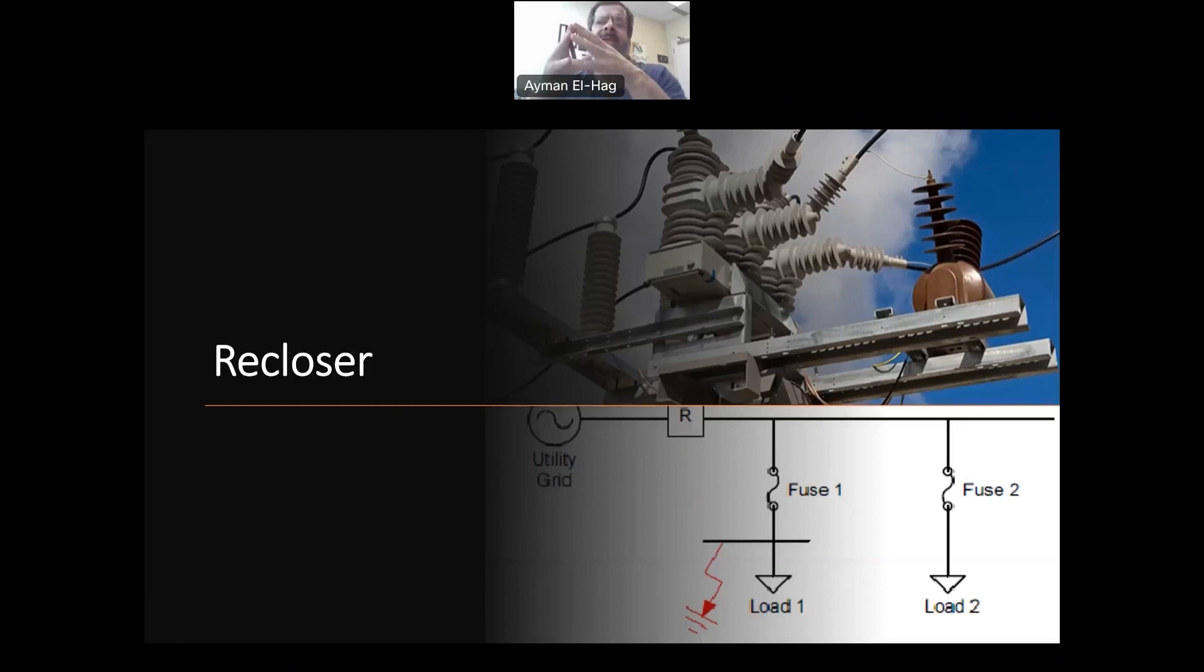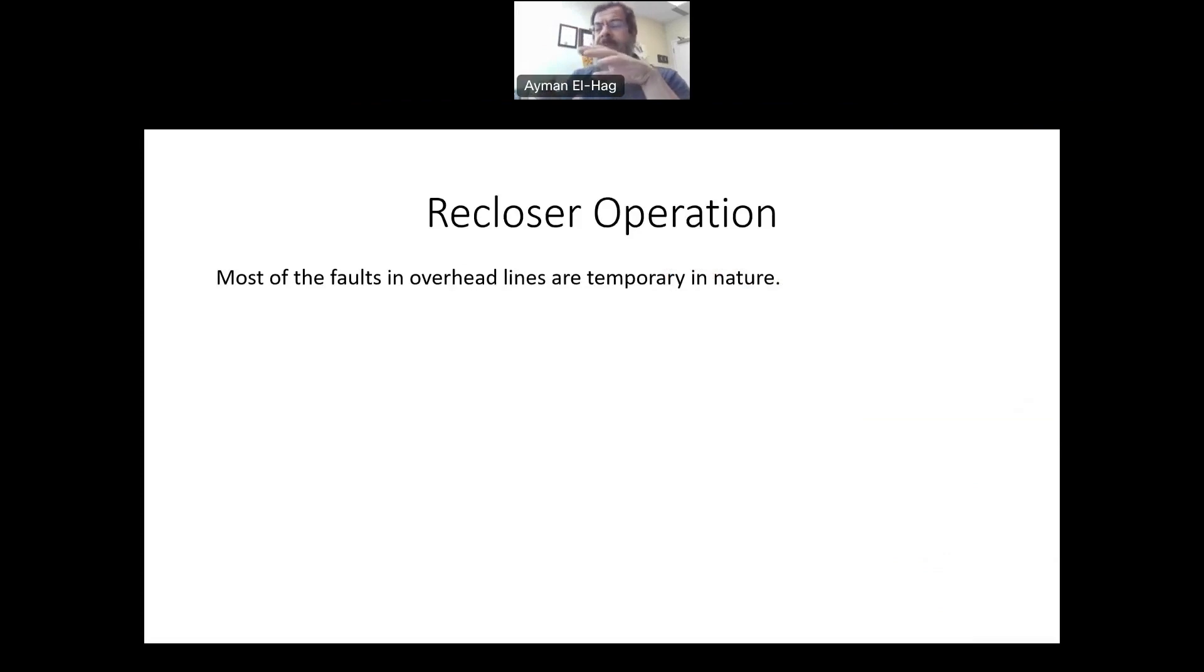Hi everyone, let's explain what is the functionality of the Recloser. First of all, most of the faults in overhead lines, especially the distribution ones, are temporary in nature, like due to lightning, a flashover because of pollution on an insulator, animal touching the line, and so on.